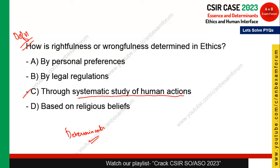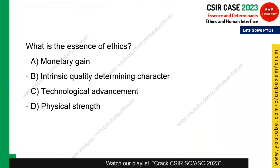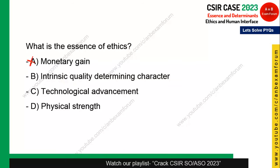Next question: what is the essence of ethics? It is not monetary gain, not technological advancement, and not physical strength. Ethics is derived from the Greek word 'ethos,' which means conduct or character. So the essence of ethics is intrinsic quality determining character. Option B is the correct answer.